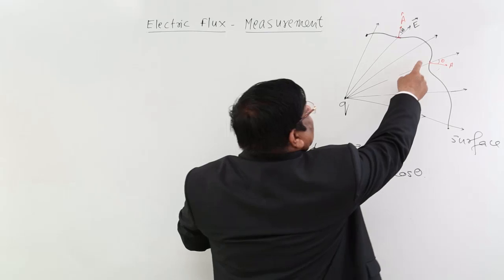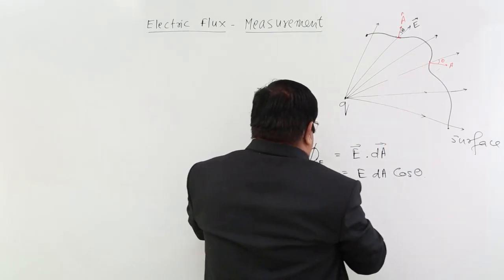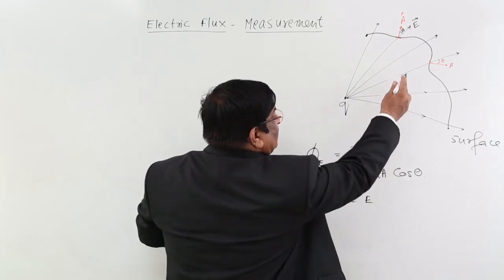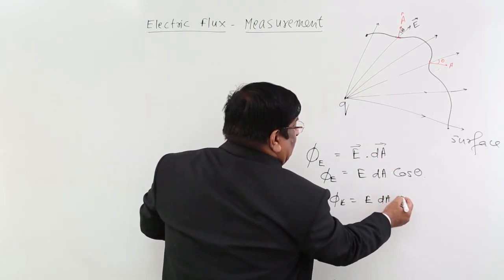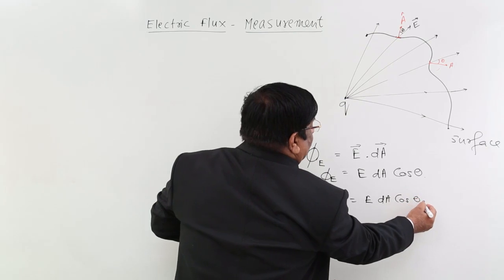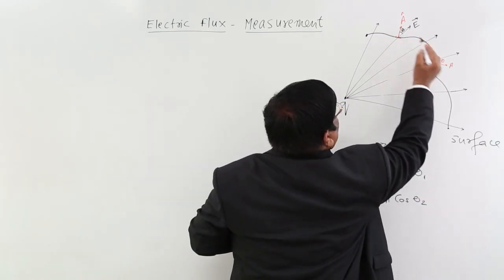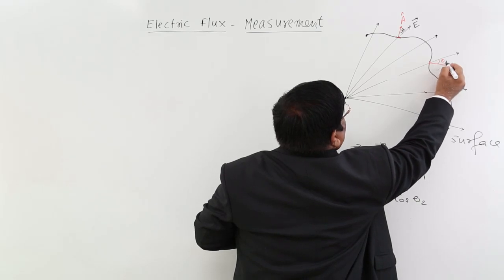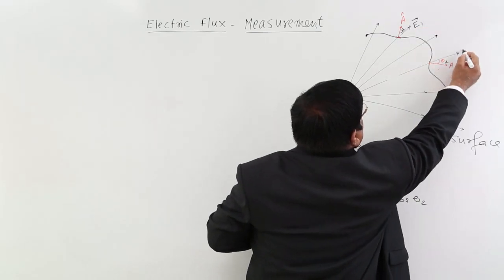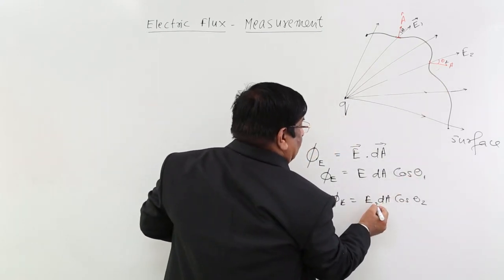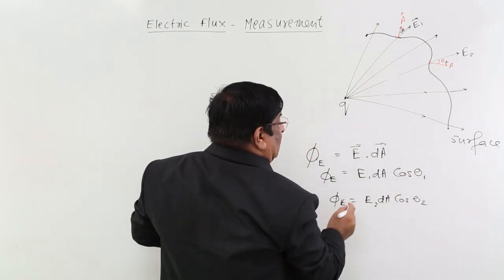So at this place flux will be different and that flux will be the other value of flux, which will be E at this location, dA and cos theta. This is theta, this theta 1, theta 2, this is E1, this is value here E2. So in this way, here the flux is phi 1, here the flux is phi 2.